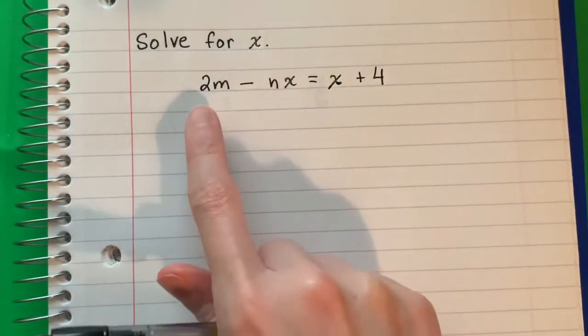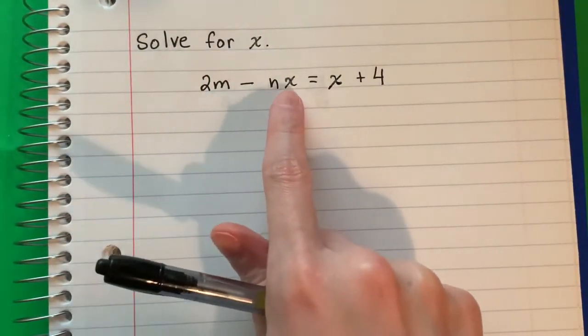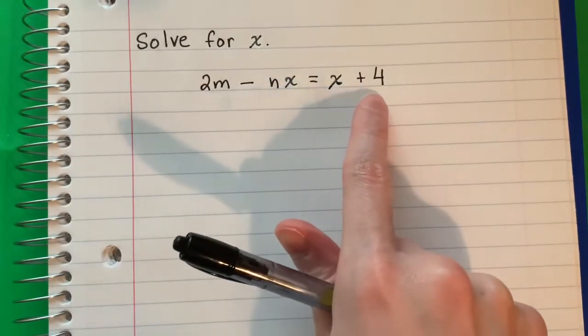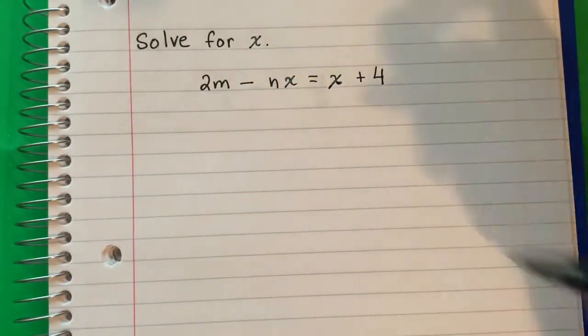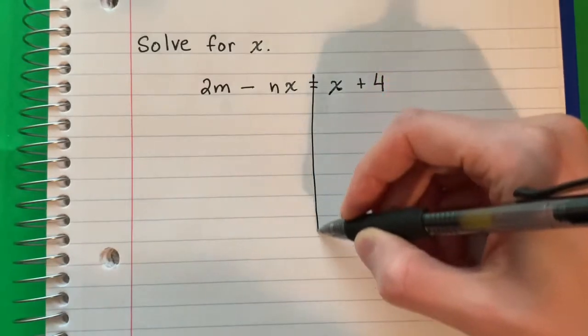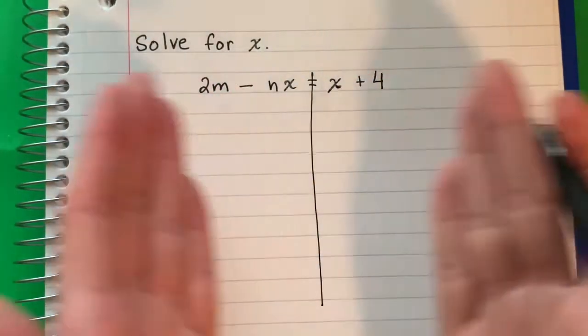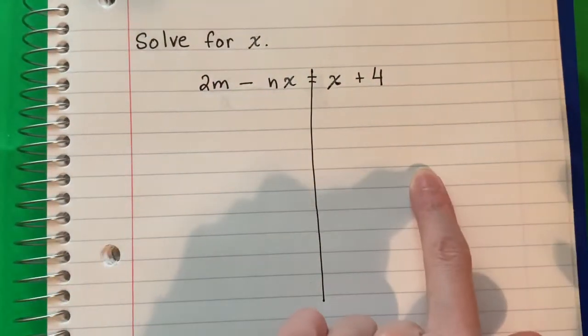Solve for x in the equation 2m minus nx equals x plus 4. The first thing I'm going to do is put a line on the equal sign because I want to separate the left from the right side.